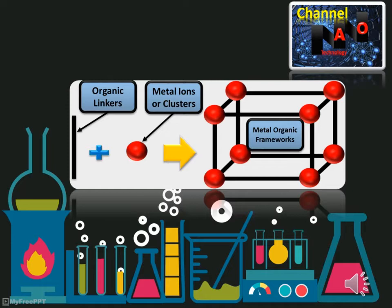The metal ions form nodes that bind the arms of the linkers together to form a repeating cage-like structure. Due to this hollow structure, metal organic frameworks have an extraordinarily large internal surface area.